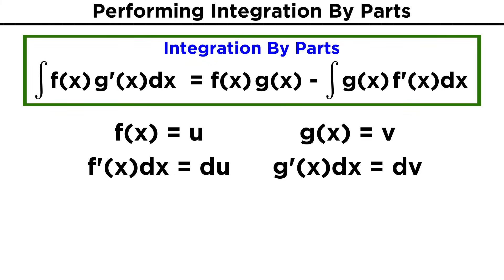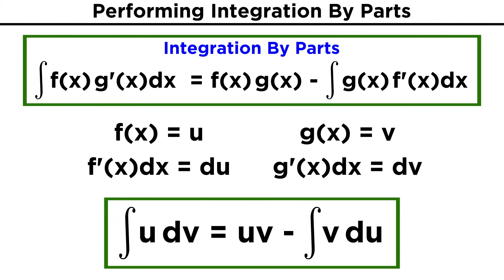An easier way to remember all of this is to represent f(x) as u, and g(x) as v. Then the first integral becomes u dv, and then we have uv minus the integral of v du.